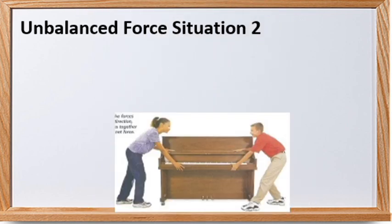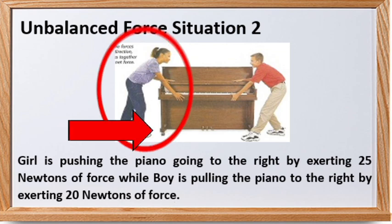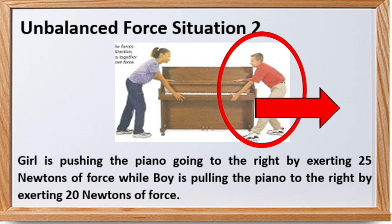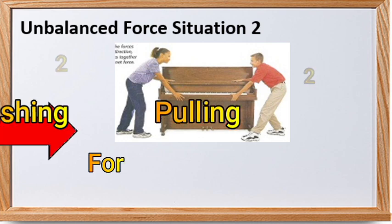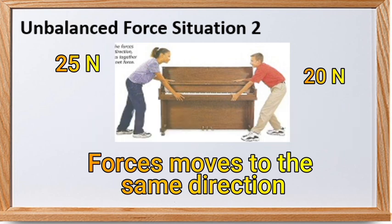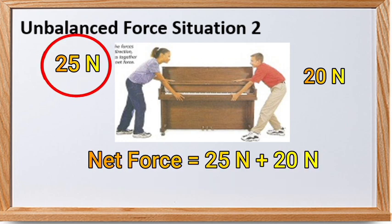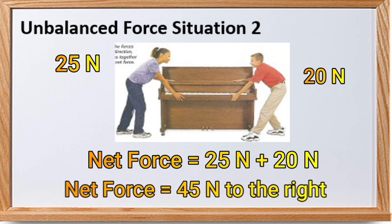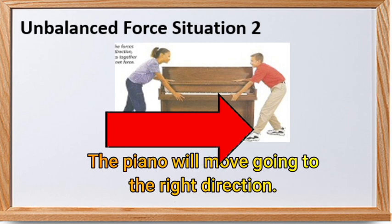Let us study the second situation showing an unbalanced force. A girl is pushing the piano to the right exerting 25 newtons of force, while a boy is pulling the piano to the right exerting 20 newtons of force. The forces exerted by both children go in the same direction, so we add them together. Therefore, net force equals 25 newtons plus 20 newtons, which equals 45 newtons going to the right. This means there will be a change in the piano's position as both forces are observed going in the same direction — to the right.